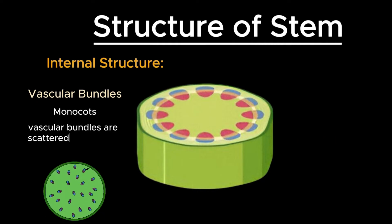In monocots, vascular bundles are scattered throughout the stem, while in dicots, they are arranged in a ring.